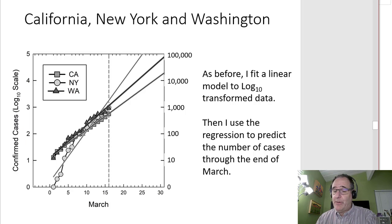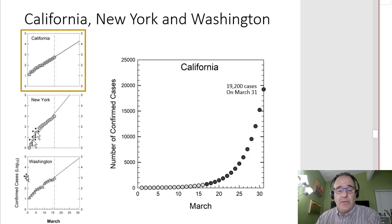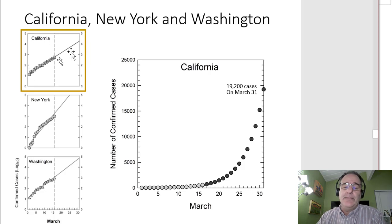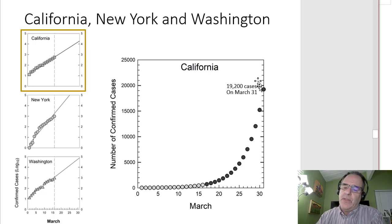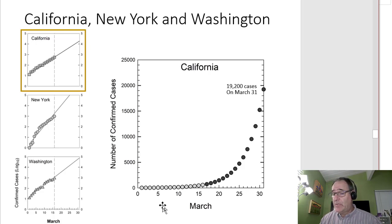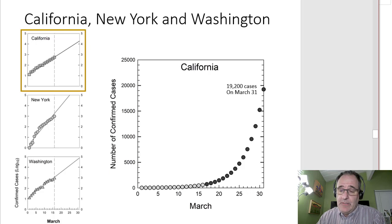New York starts out at the lowest values early in the month and ends up growing very quickly — we would predict it to have the highest number of cases at the end of the month. Washington State is intermediate. California looks like it's having the slowest accumulation. Looking at California specifically: the gray is the actual data and black is the prediction through the end of the month. Two weeks from today, if we continue that trajectory, we'll have 20,000 cases in California alone. We have 500 right now, meaning roughly 10,000 cases added per week, but exponentially — slower at first, faster toward the end.